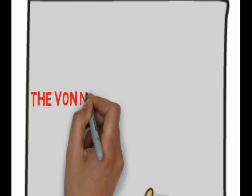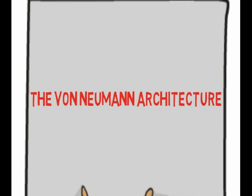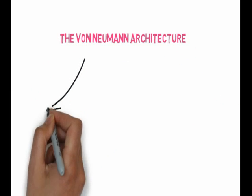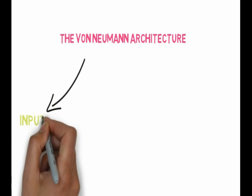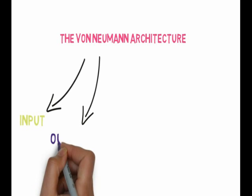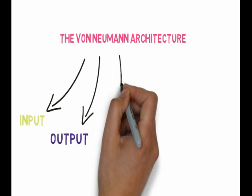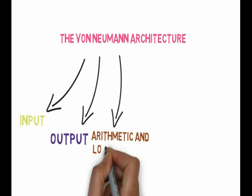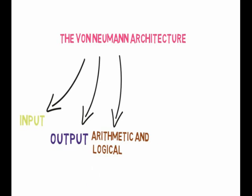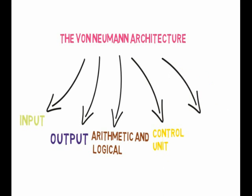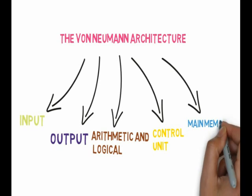Good day everyone. Today you will learn about von Neumann architecture. The components of von Neumann architecture are the input, output, arithmetic logic unit or ALU, control unit, and main memory.